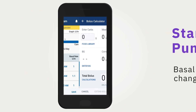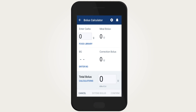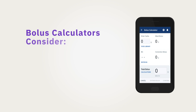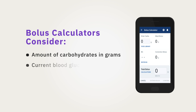Insulin pumps can also suggest or deliver a bolus dose when needed. Equipped with bolus calculators, insulin pumps consider the amount of carbohydrates in grams, the current blood glucose, and personalized settings to calculate a suggested amount.